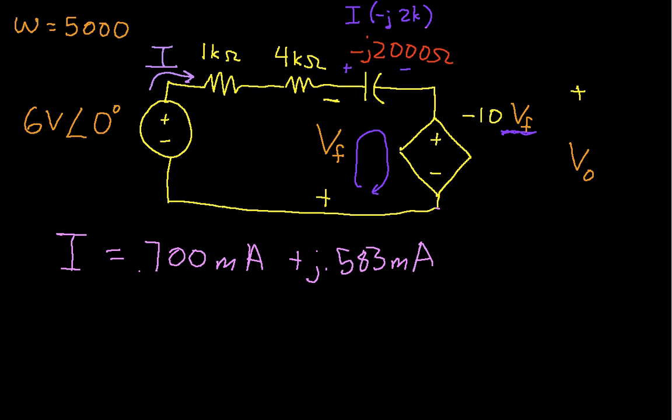It turns out, however, this analysis has gotten fairly complex. The reason for that is that we have our dependent source driven by Vf, and Vf turns out to be not particularly easy to compute.